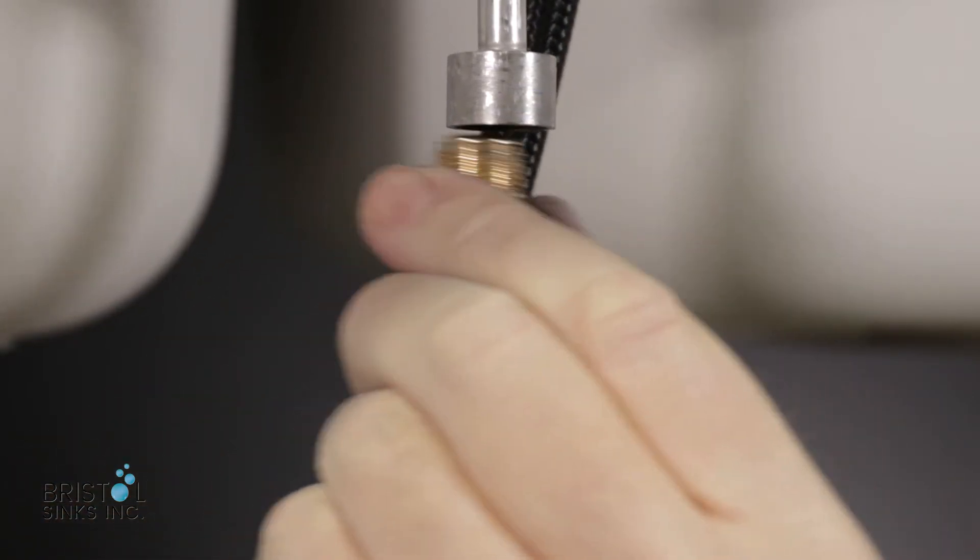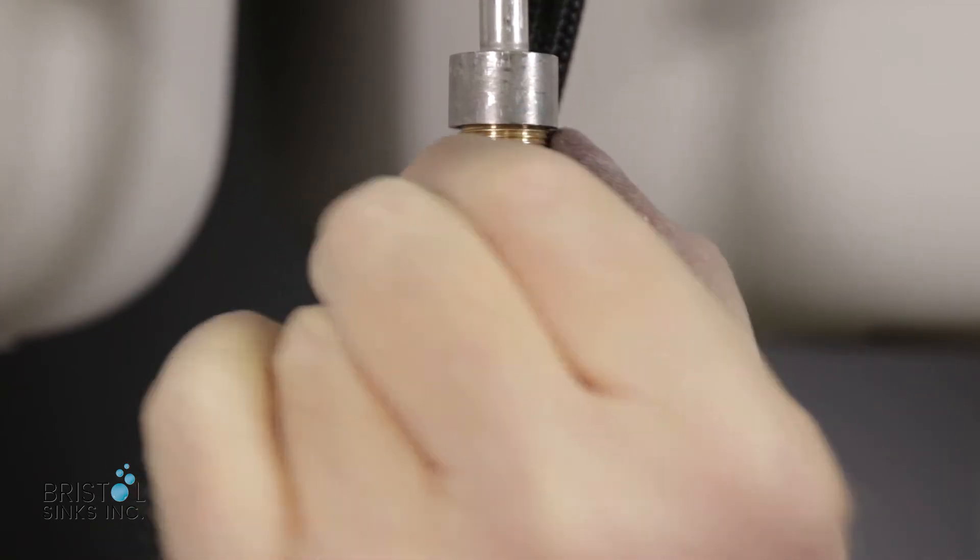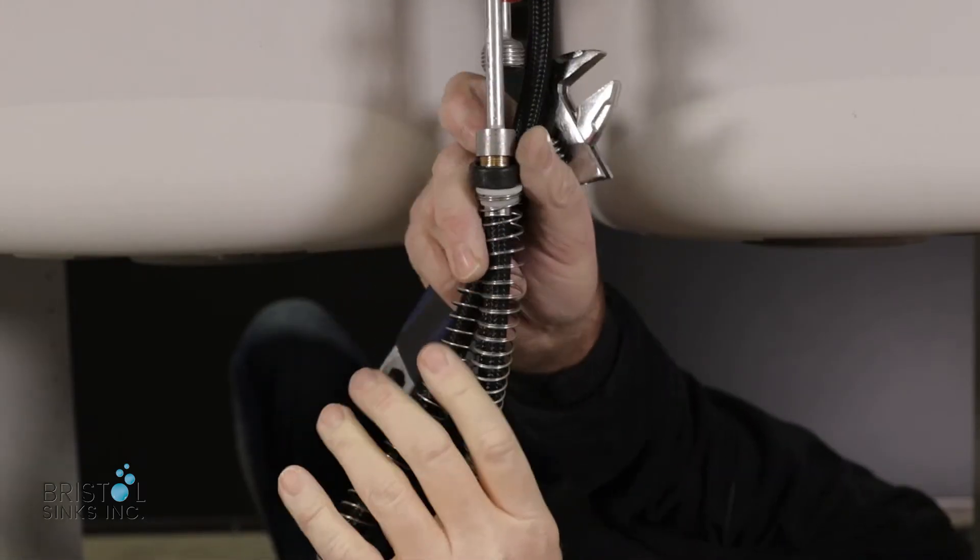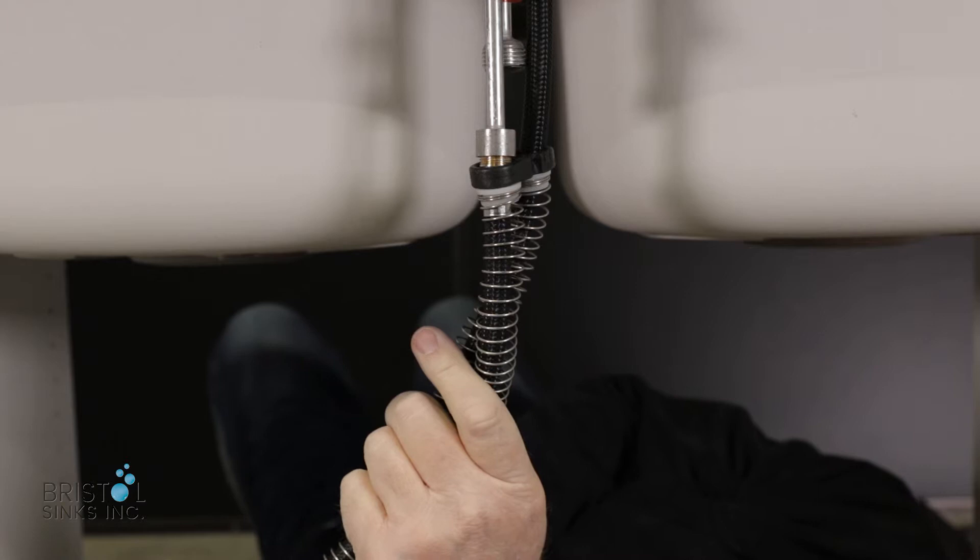Once it's off, hook up the hose directly to the faucet and then turn on the water. If the pressure is okay, then we need to take apart the check valve and rinse it out.